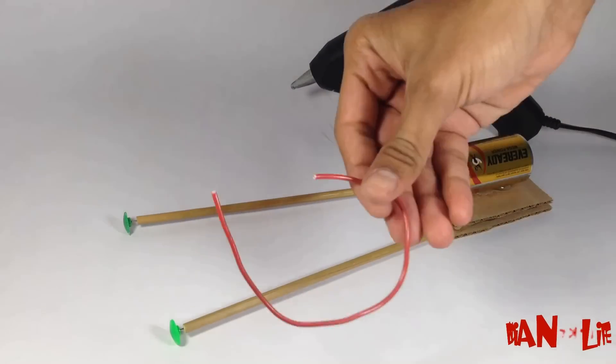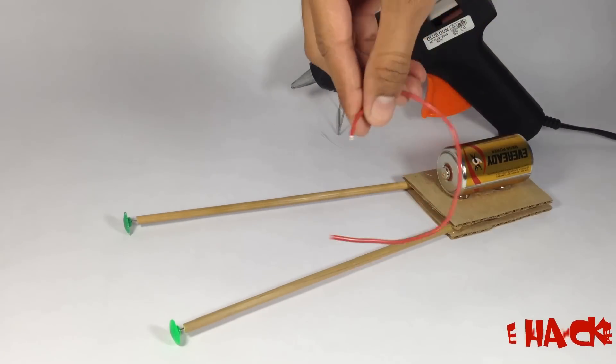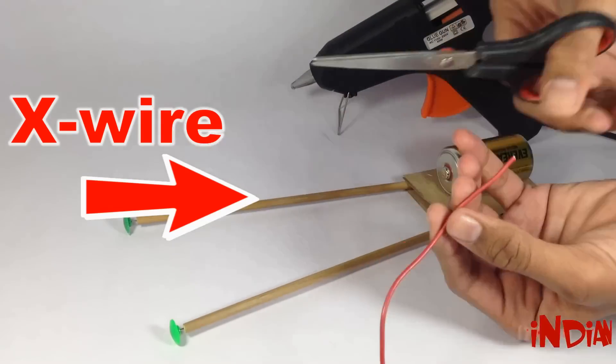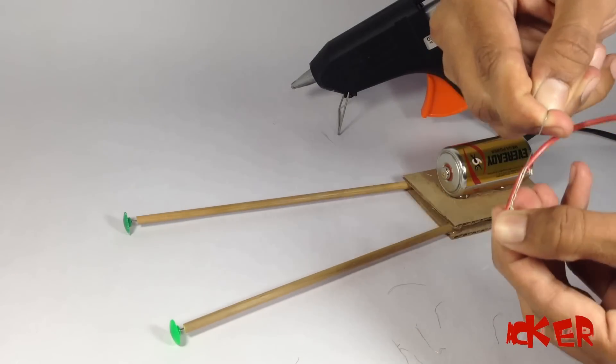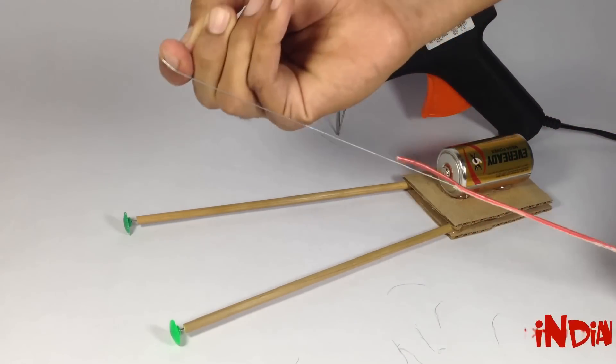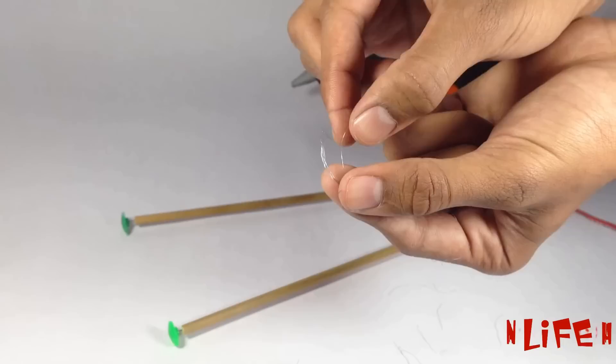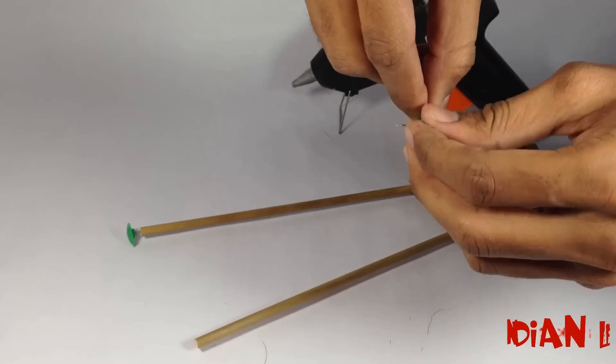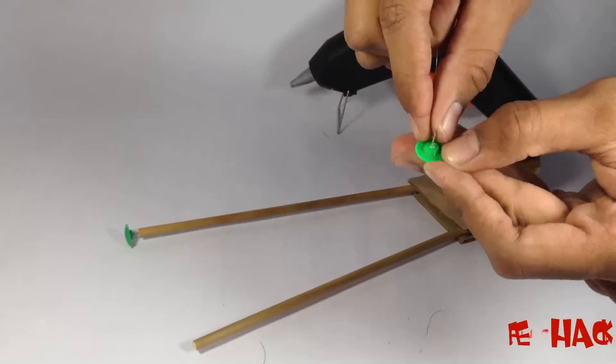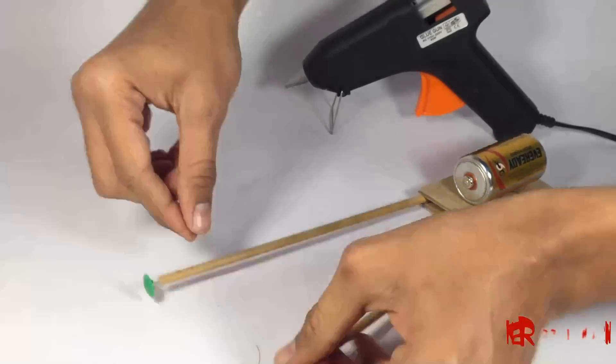And separate X wire from the insulation. And fix the X wire with the paper pin.